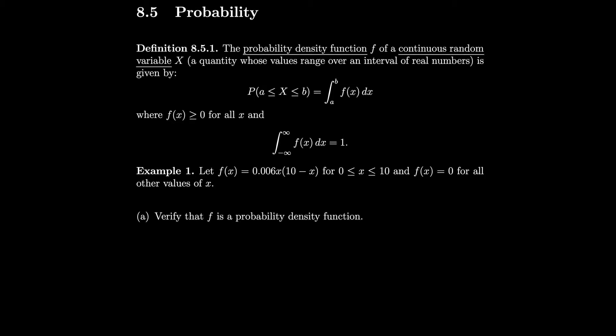So capital X is a continuous random variable — just the possible outcomes of a certain event. For example, if we have a stopwatch that goes from 0 to 60 seconds, then capital X could be the possible values of stopping from 0 to 60 seconds. So it could be 30 seconds, 45 seconds, or even 45 and a half seconds.